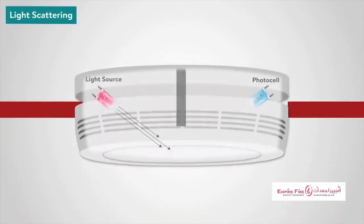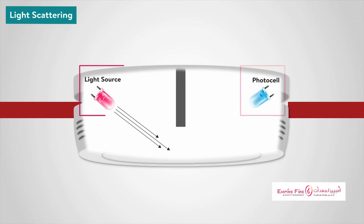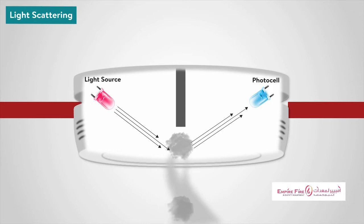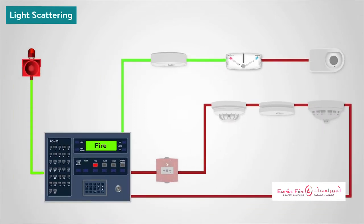The light scattering smoke detector operates on the Tyndall effect. A photocell and light source are separated from each other by a darkened chamber, such that the light source does not fall on the photocell. The passage of smoke into the chamber causes the light from the source to be scattered and fall on the photocell. The photocell output is used to initiate an alarm.